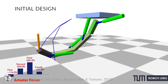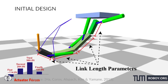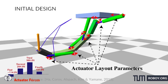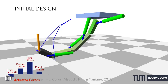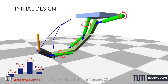Let's first understand what robot design and robot motion are. A robot design can be described by a set of parameters such as link length and actuator attachment points, while robot motion can be described by joint positions, joint torques, and contact forces at every time frame.